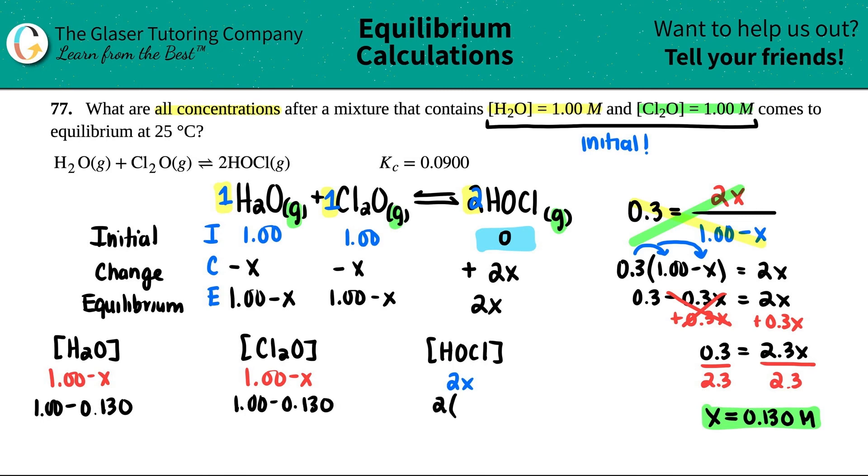Now we're going to get our concentrations: H2O equals, Cl2O equals, and HOCl equals. 1 minus 0.130 is 0.87 molarity, same thing here, and 2 times that is 0.260 molarity.